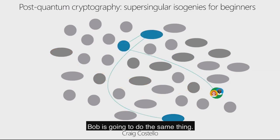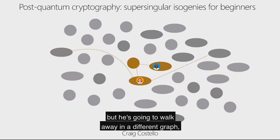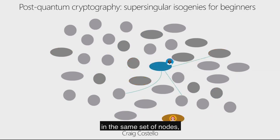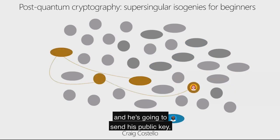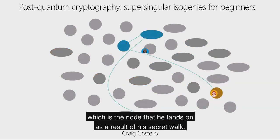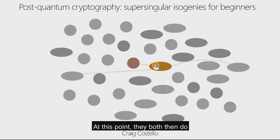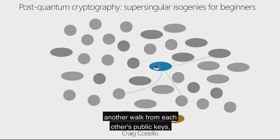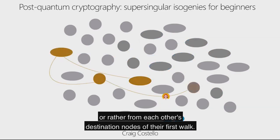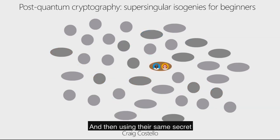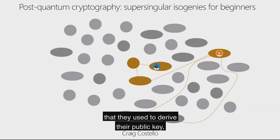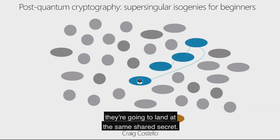Alice is going to stop at some other node in the graph and not reveal her walk — that's her secret — but she's going to send Bob her node, which is her public key. Bob is going to do the same thing: start at the same place as Alice, walk away in the same set of nodes but on different edges, and send his public key, which is the node he lands on. They both then do another walk from each other's destination nodes, using their same secret, and land at the same shared secret.